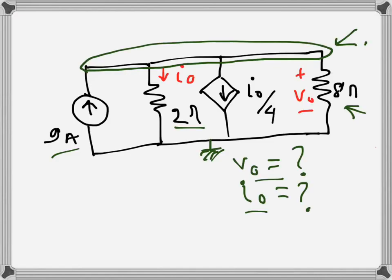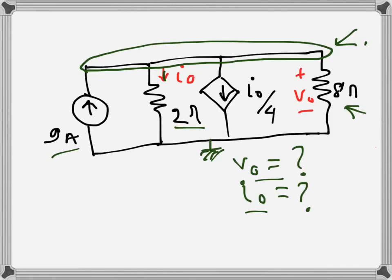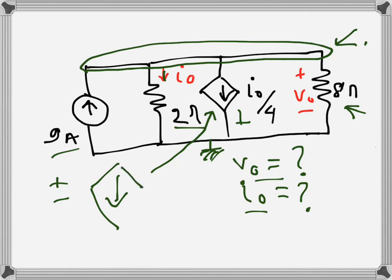The other currents are all leaving. i_naught is coming down, so that's i_naught plus this current which is i_naught over 4. Now this is a dependent source — to be precise, this is a current-dependent current source. It is a current source because it has an arrow, not a plus-minus, and this shape indicates it is a dependent current source.